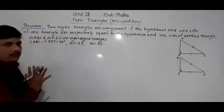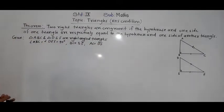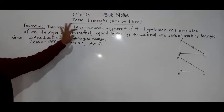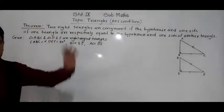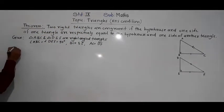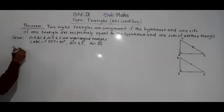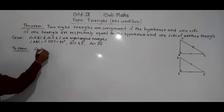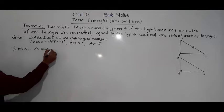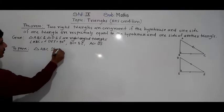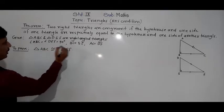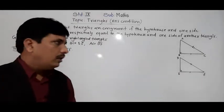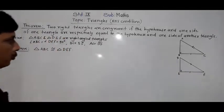These things are given, and we have to prove that the two right triangles are congruent — meaning we need to prove triangle ABC is congruent to triangle DEF. That is what we are going to prove now.